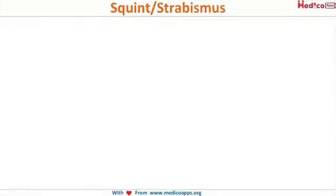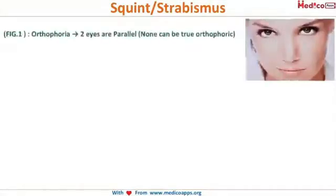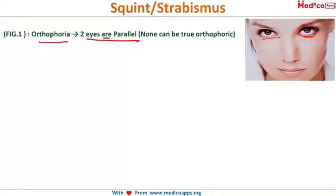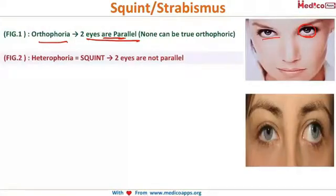Squint is also known as strabismus. Looking at this image, you can see one eye is elevated compared to the other. Orthophoria means both eyes are parallel to each other in all gazes — this is a hypothetical condition, as none of us is truly orthophoric. All of us have some amount of squint, which we term heterophoria.